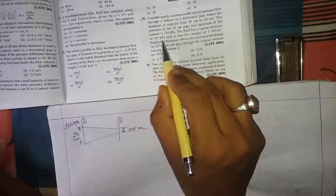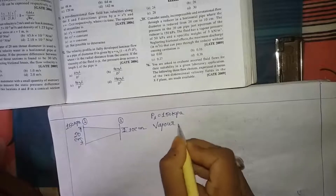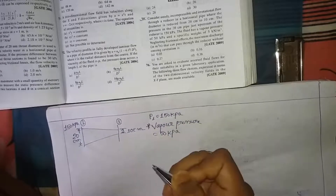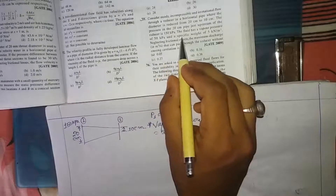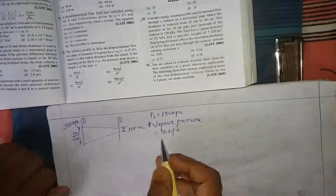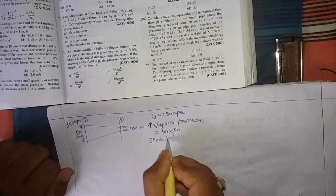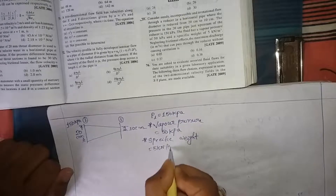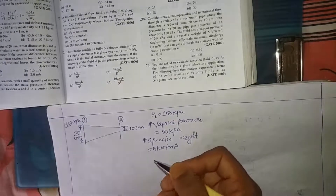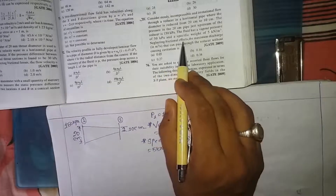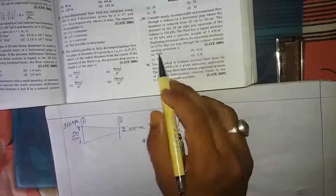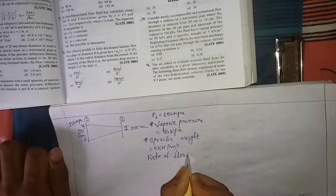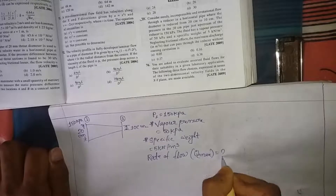The fluid has a vapor pressure of 50 kPa — this is a new term. The specific weight is 5 kN/m³ — also a new term we'll discuss. Neglecting frictional effects, we need to find the maximum discharge Q_max that can pass through the reducer without causing cavitation.